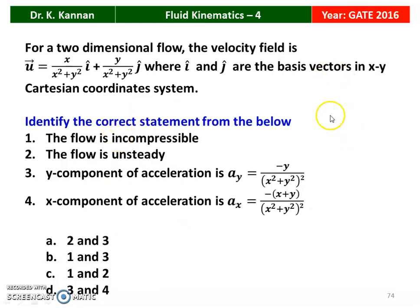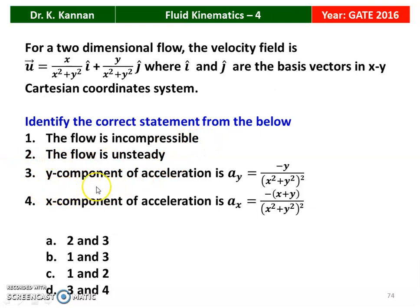The next question from the 2016 question paper: for a two-dimensional flow, the velocity field U vector equal to X/(X² + Y²) i-vector plus Y/(X² + Y²) j-vector, where i-vector and j-vector are the basic vectors of the XY Cartesian coordinate system. Identify the correct statement: 1) the flow is incompressible; 2) the flow is unsteady; 3) Y component of acceleration AY equal to minus Y/(X² + Y²)²; 4) X component of acceleration AX equal to minus(X + Y)/(X² + Y²)². The correct answers are 1 and 3.